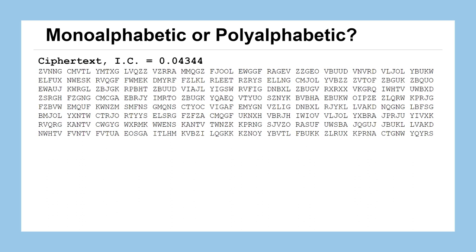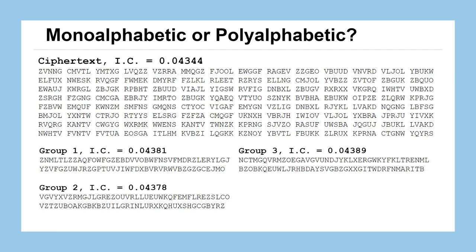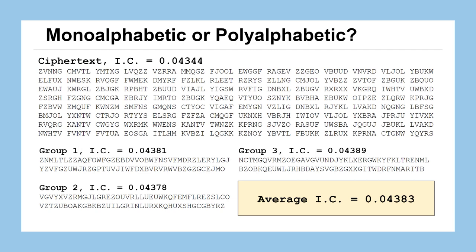Trying three groups gives an average IC of about 0.04383 — still polyalphabetic-looking — so a three-letter keyword doesn't fit either. A keyword length of four gives an average IC of about 0.044 — still not reaching that monoalphabetic target of 0.065.